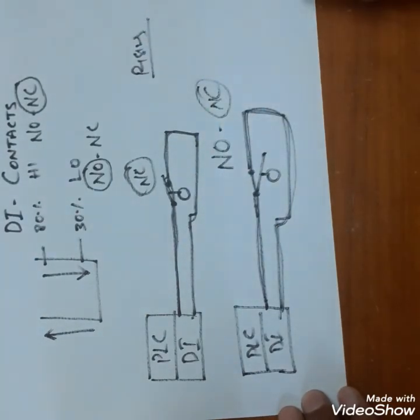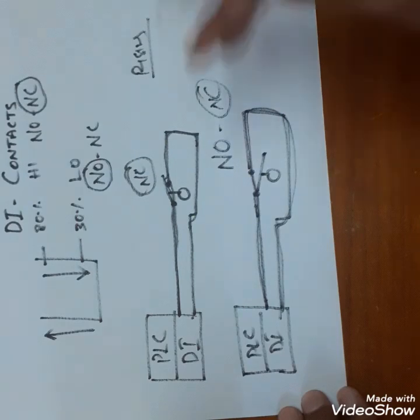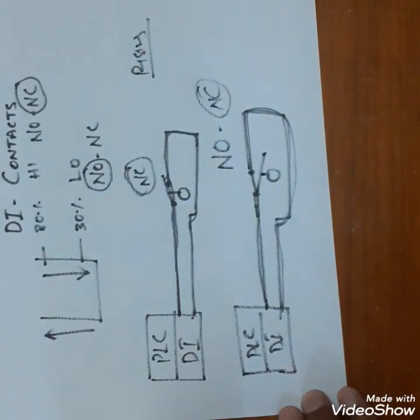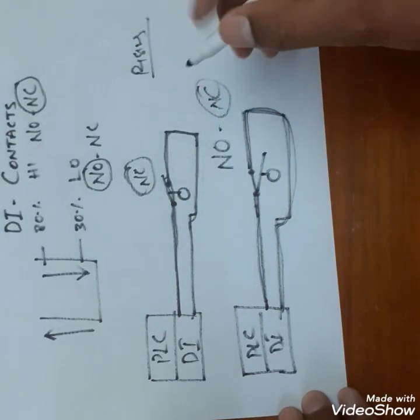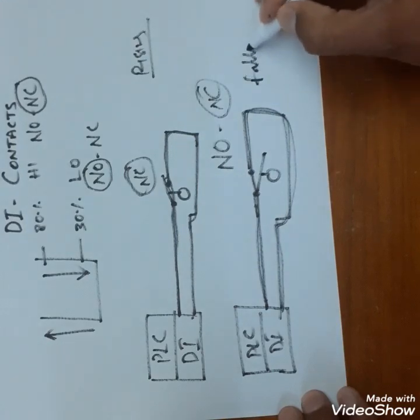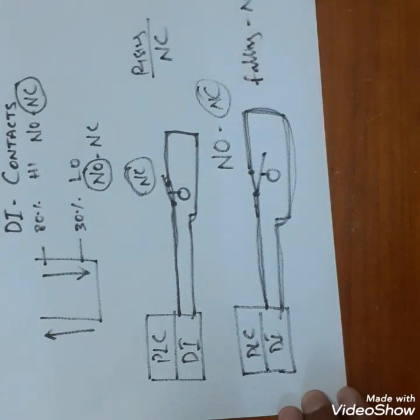If anything goes wrong with this loop, like wire was removed or fuse was blown or something happened in this loop, you will get the alarm. So for falling we should use NO and for rising we should use NC for fail-safe application.